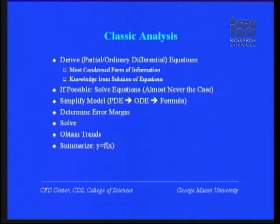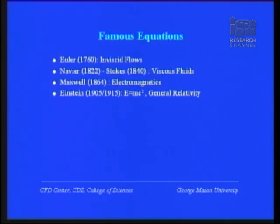If we take classic analysis, we are trying to derive a basic equation — in most cases a partial differential equation describing nature, though it could be an ordinary differential equation for population growth or battle management. This gives you the most condensed form of information, and by knowing the trends or exact solutions you gain knowledge about what to expect in the future. The problem, of course, is that in almost all cases we can't solve these equations analytically. Some famous equations: the inviscid flow equations derived by Euler in 1760; for viscous flows — air, blood, water, oil — Navier and Stokes, approximately 160 to 170 years old; Maxwell for electromagnetics; Einstein — I think everybody knows that equation.